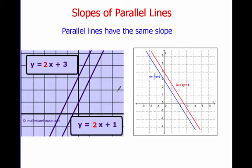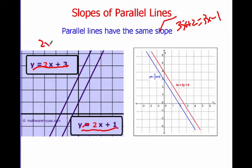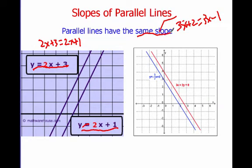If you remember back to when we were solving equations and talking about how many solutions an equation has — we said that if an equation had the same coefficient on both sides but different constants, like 3x plus 2 equals 3x minus 1, this equation had no solution. Similarly, 2x plus 3 and 2x plus 1, if set equal to each other, have no solution. The solution to an equation is simply where lines intersect, and with parallel lines they never intersect. So the key thing is that parallel lines have the same slope.